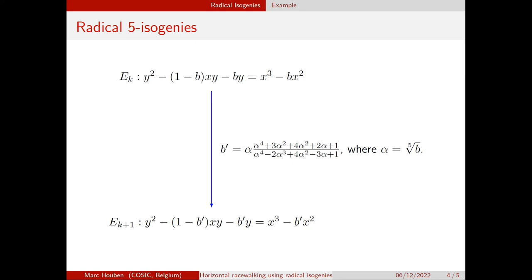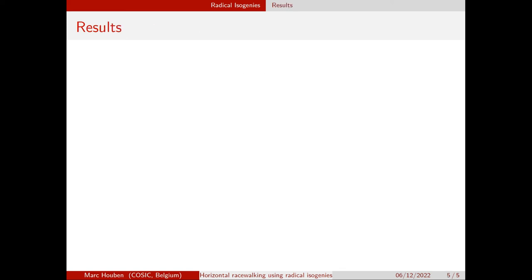You can, in fact, prove that for every degree n there exists a radical isogeny formula. But the question is how do you find them — how do you find this magic expression? That's not super obvious, but that's basically what we did.